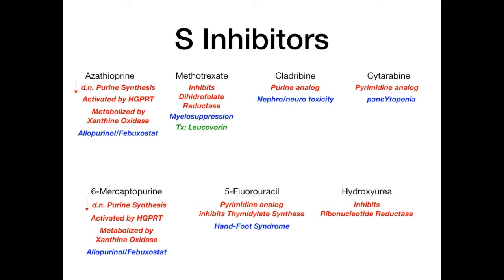For cladribine, it causes nephro- and neurotoxicity. For cytarabine, it causes pancytopenia — easy to remember because the 'y' appears in pancytopenia, in pyrimidine analog, and in cytarabine — it all goes together with the Y. 5-fluorouracil causes hand-foot syndrome, basically reddening of the hands and feet — very high yield. For hydroxyurea, there's no specific ADR to memorize; focus on the mechanism.